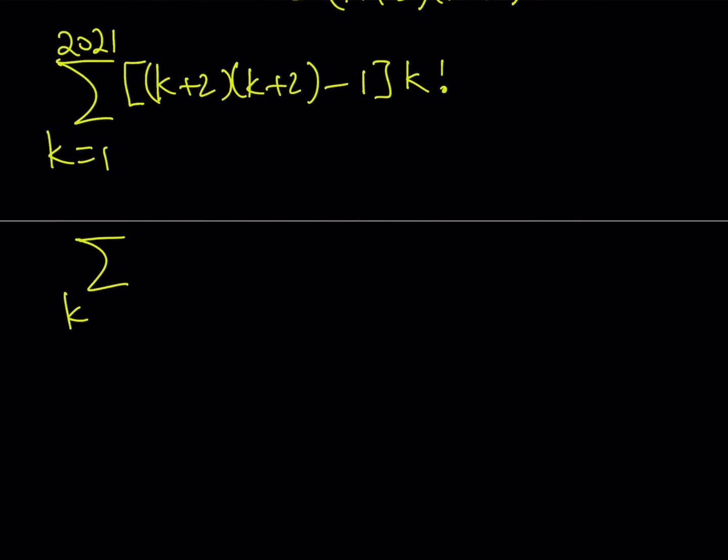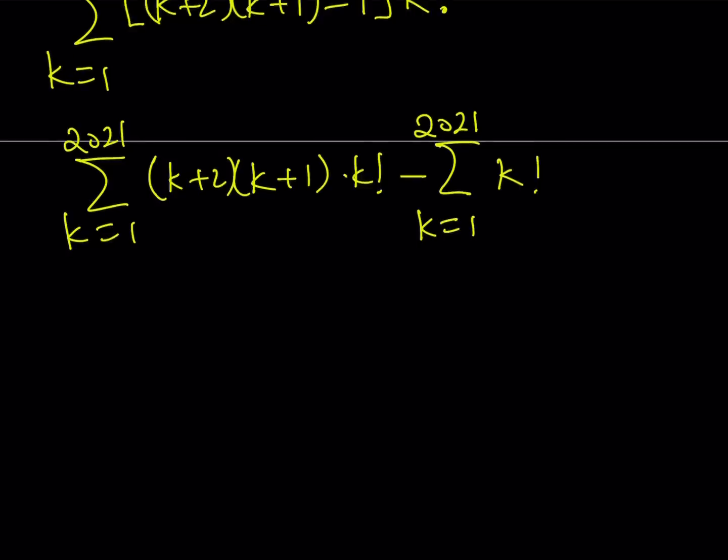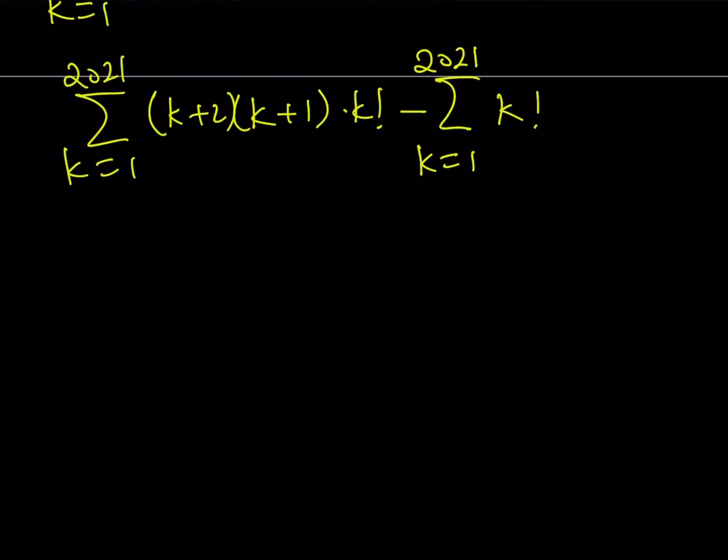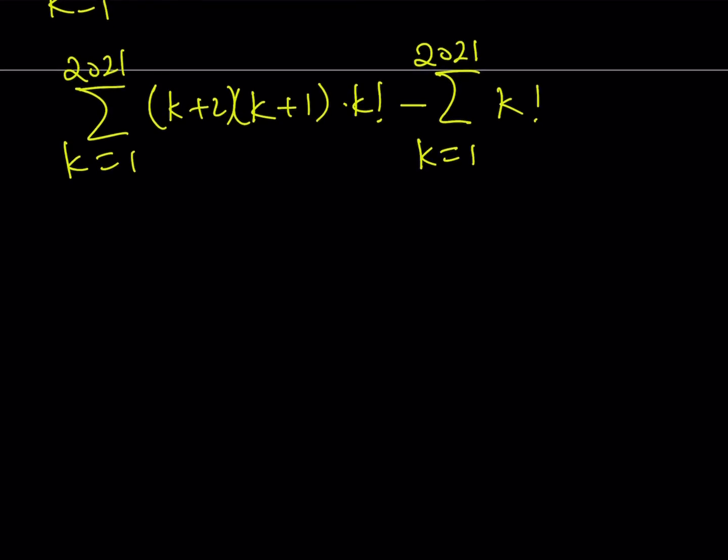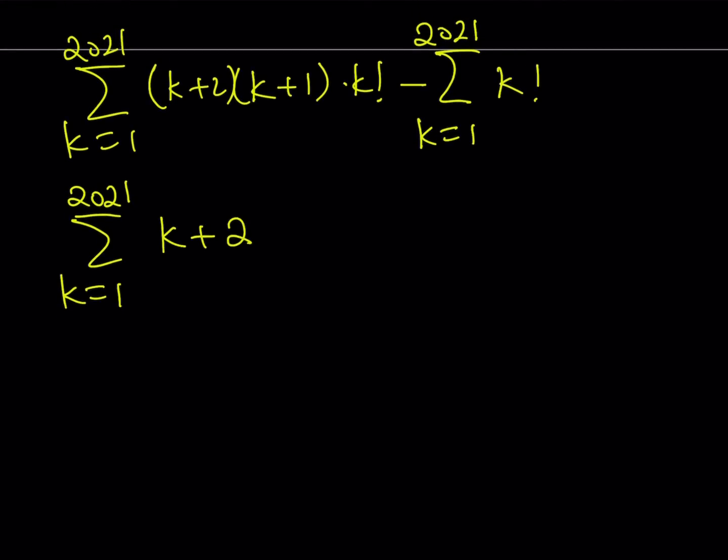It doesn't look very good, but it's going to get better. I'm going to distribute this because that's a difference multiplied by k factorial. That's going to give me k plus 2 times k plus 1 times k factorial minus - since that's a minus sign, I can separate those two sigmas - the second part is just 1 times k factorial, which is just k factorial.